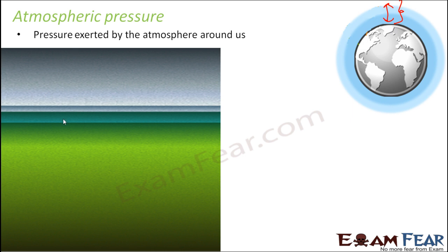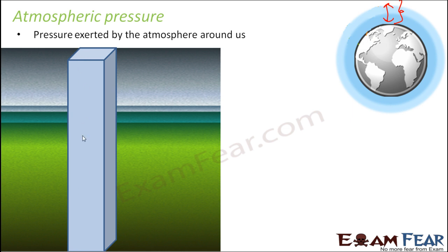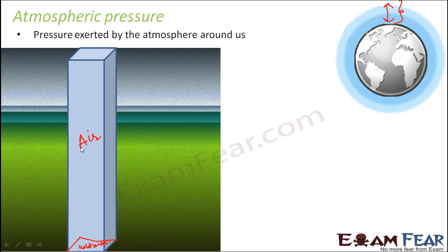We can understand atmospheric pressure this way: the atmosphere is like an object with a very big height, something like a long column. This lengthy object exerts some pressure over a particular area. If we consider a unit area, the pressure exerted by this column over that unit area is defined as atmospheric pressure — the pressure exerted by a long cylinder carrying air, just like the atmosphere.